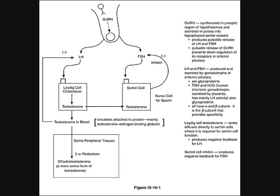LH, FSH, TSH, and human chorionic gonadotropin are all glycoproteins; they are water-soluble and have a very long half-life. The alpha subunits are the same across these hormones, and they differ in their beta subunits, which provide specificity and activity.